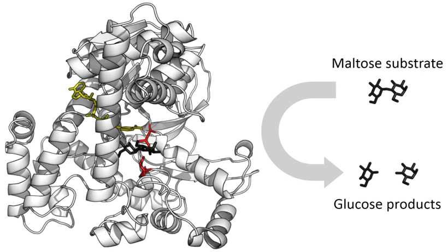Most enzymes are proteins, although a few are catalytic RNA molecules. The latter are called ribozymes. Enzymes' specificity comes from their unique three-dimensional structures. Like all catalysts, enzymes increase the reaction rate by lowering its activation energy. Some enzymes can make their conversion of substrate to product occur many millions of times faster. An extreme example is orotidine-5-phosphate decarboxylase, which allows a reaction that would otherwise take millions of years to occur in milliseconds.